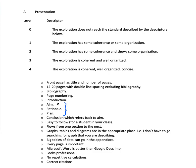A rationale is why are you doing the IA? Why did you choose that aim? Why did you choose that topic? Don't just put 'I chose this IA because I like football' — that's not really good enough. Something like 'I chose to model my free kick because I take the free kicks for my football team, I'm not good enough, and I want to get better.' That's a good rationale.